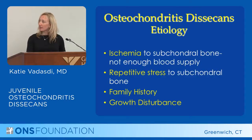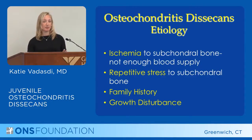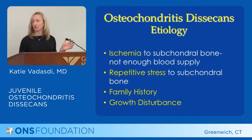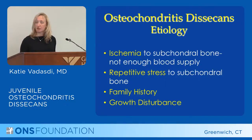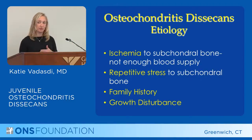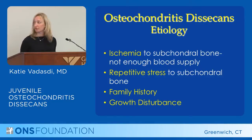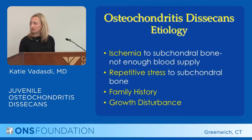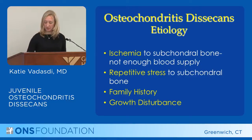What causes these? A lot of times it's actually unknown, so we don't have a good answer for a patient as to why this happened. But often it's ischemia to the subchondral bone — it's thought that there's not enough blood supply to a certain area of the end of the femur. That's often a result of repetitive stress of that subchondral bone, so it can be a repetitive or overuse injury. There's also some thought that family history or growth disturbance can be associated with it.